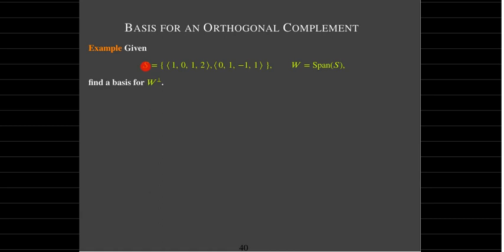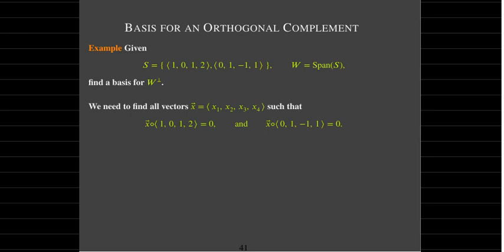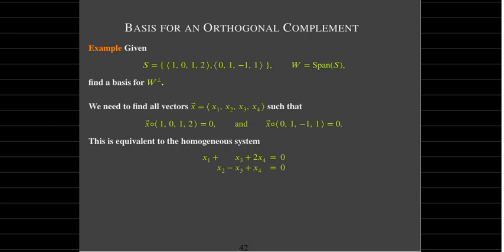Here's an example: given a spanning set for W in R4, I'd like to find a basis for W-perp. Any vector in W-perp must be orthogonal to each spanning vector. So the dot product of X with the first vector and the dot product of X with the second vector must equal zero. This gives us a system of equations: X1 + 0·X2 + X3 + 2X4 = 0, and 0·X1 + X2 − X3 + X4 = 0. We transform the coefficient matrix to reduced row echelon form to solve this homogeneous system.